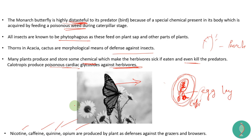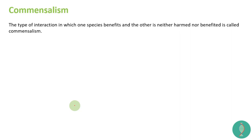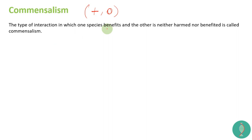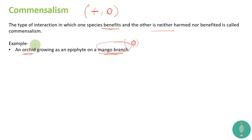Next is commensalism. Commensalism is the interaction between two species where one species is benefited and the other is neither harmed nor benefited. For example, orchids grow as an epiphyte on a mango branch. The mango tree has no difference — it shows a neutral interaction — but the orchid gets shelter and nutrition, so it benefits.